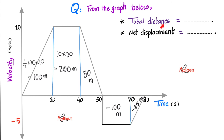When it comes to total distance, forget the negatives — make everything positive. 100 plus 200 is 300, plus 50 is 350, plus 100 is 450, plus 25 is 475 meters. This is the total distance traveled in 80 seconds.